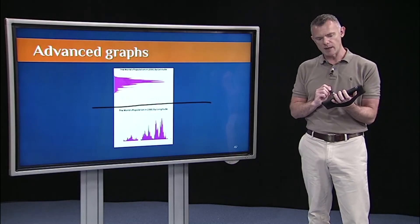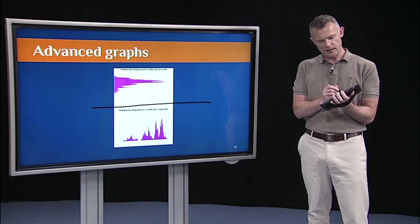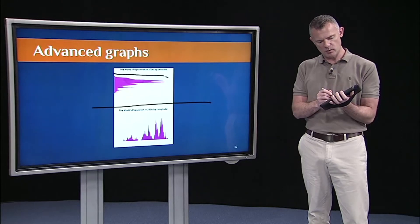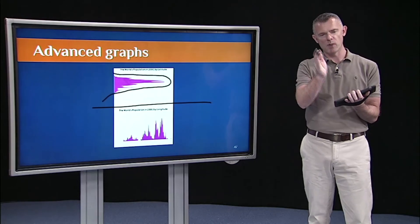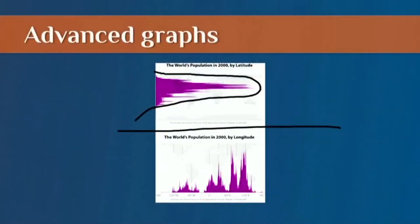So if you look at the top graph, what we're plotting is you get this nice normal distribution, pretty much, right? What that means is most people live around the equator and as you move away from the equator, fewer and fewer people live in those places.